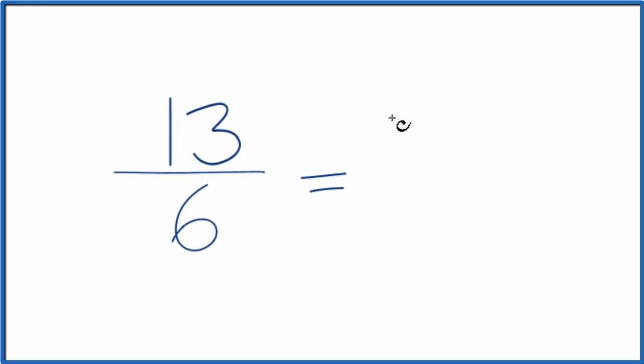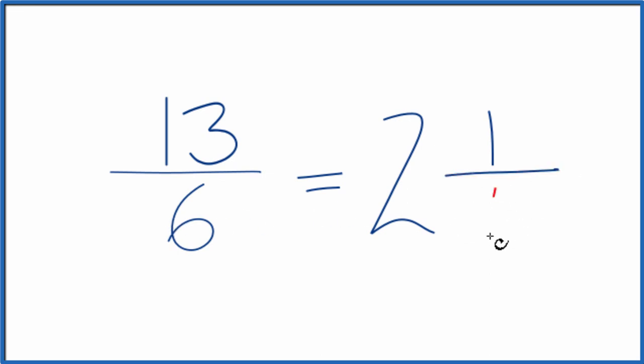6 goes into 13, 2 times. 2 times 6, that's 12. 1 left over. And then we just bring the denominator across.